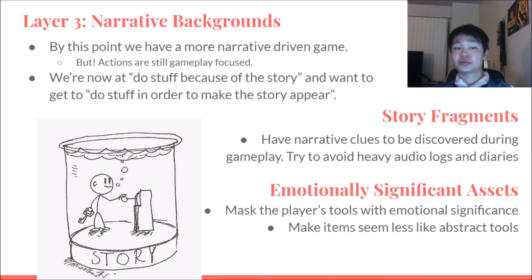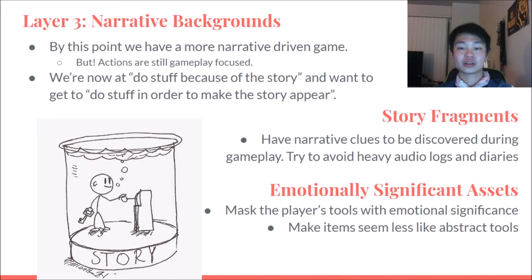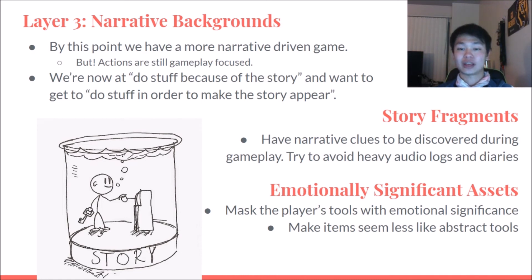Now we've got layer three: narrative backgrounds. With the addition of narrative goals, our scenes are now more narratively driven. However, the actions the player is taking are still somewhat gameplay-focused — searching for a key in an environment is still mechanical. After adding the narrative goal, we've moved from 'doing X to get the story going' to 'let's do this thing because of the story.' Now, in this section, we want to move into 'do this thing to make the story appear.' To accomplish this, we want gameplay and narrative beats to coincide, and to have player actions cause the story to emerge.